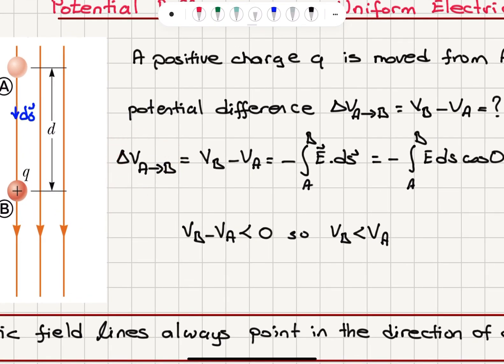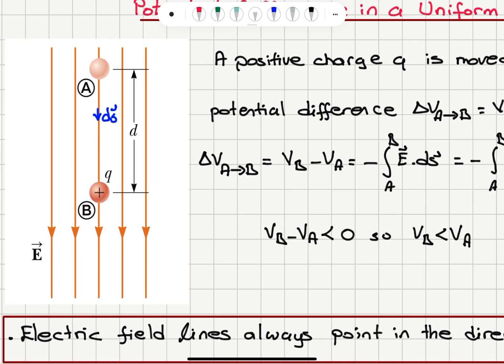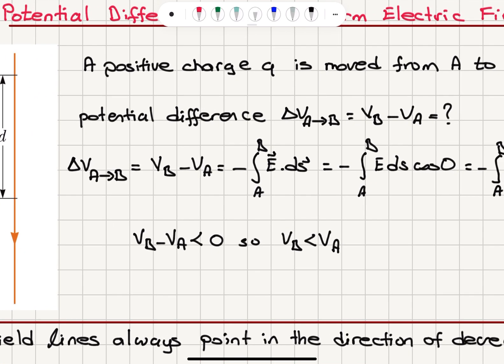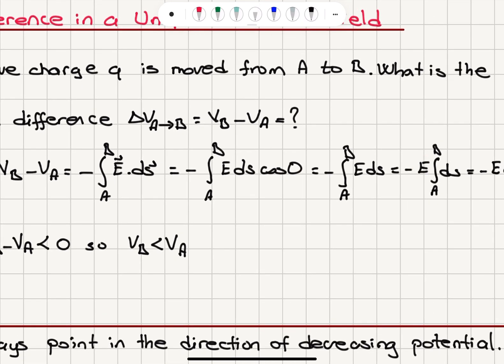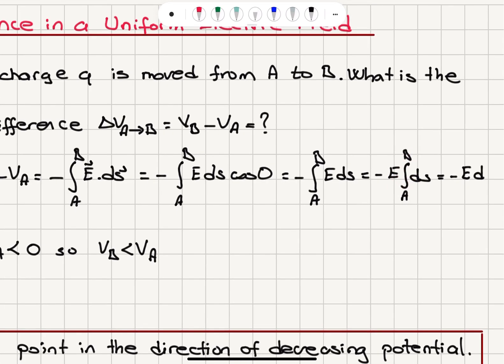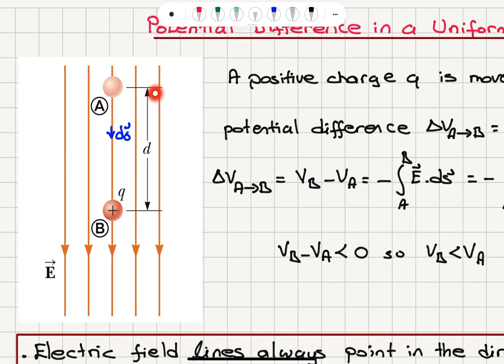Delta V from A to B, or VBA — potential of B with respect to A — is minus the integral from point A to point B of E dot DS. Going directly from A to B, the incremental displacement vector DS is parallel to the electric field, so the dot product is E DS cosine zero, which equals one. Since the electric field is uniform, it comes out of the integral, and the integral of DS from A to B is just the total distance D.